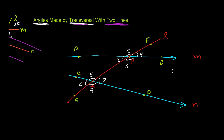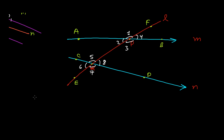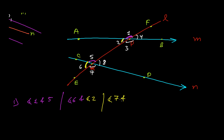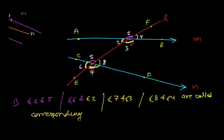I'm going to name those angles very nicely — try to understand. Angle 1 and angle 5, angle 2 and angle 6, angle 3 and angle 7, and angle 4 and angle 8 are called corresponding angles.